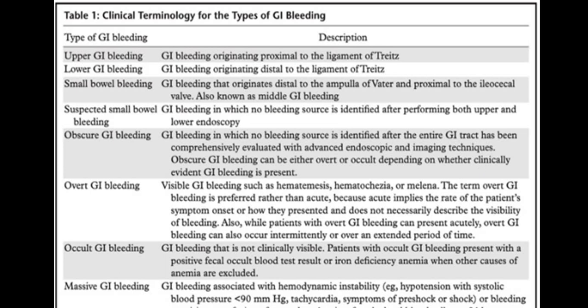First we will talk about some terminology in GI bleeding. Upper GI bleeding means GI bleeding originates proximal to the ligament of Treitz. Lower GI bleeding is after or distal to the ligament of Treitz. Then there is small bowel bleeding, which starts distal to the ampulla of Vater and proximal to the ileocecal junction or ileocecal valve — also known as middle GI bleeding. Suspected small bowel bleeding means there is GI bleeding but you cannot identify the source after performing both upper and lower GI endoscopy, so we call it endoscopy negative, or suspected small bowel bleeding.